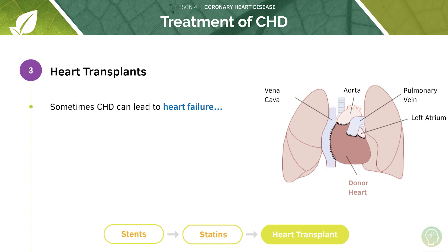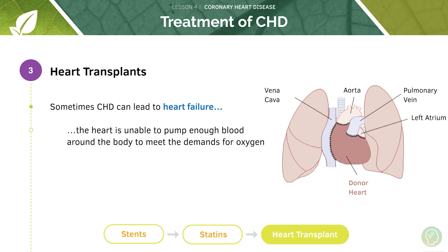Sometimes coronary heart disease can be so severe that it leads to heart failure. This occurs when a section of the heart muscle is not receiving enough oxygen or glucose and is therefore unable to contract to pump enough blood around the body to meet its demands. This is a really severe case of coronary heart disease, and in this case a severe treatment option — a heart transplant — will have to be used.